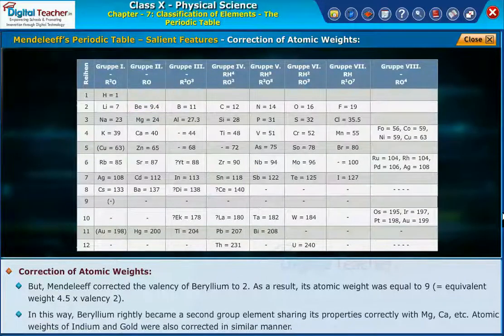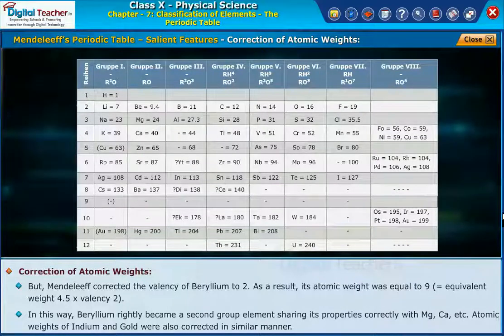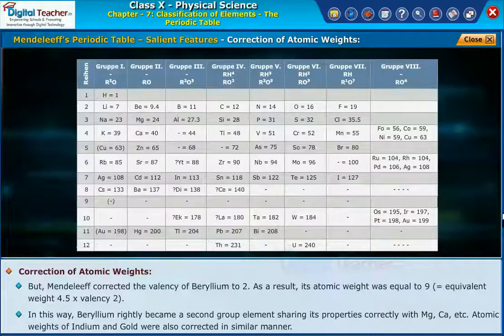In this way, Beryllium rightly became a second-group element, sharing its properties correctly with Magnesium, Calcium, and others. The atomic weights of Indium and Gold were also corrected in a similar manner.